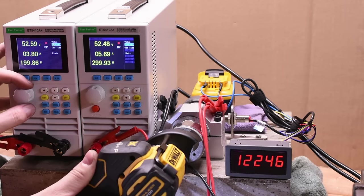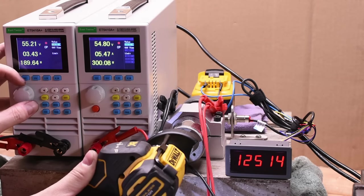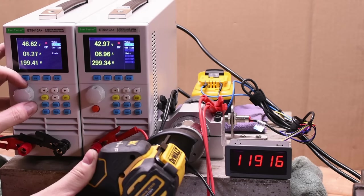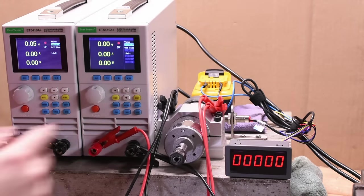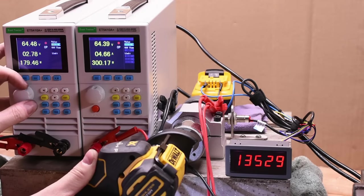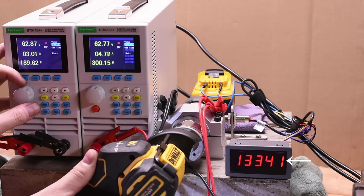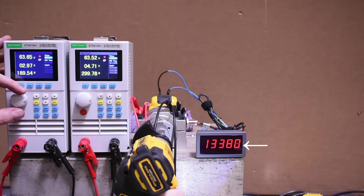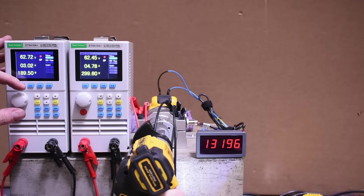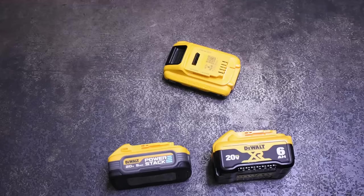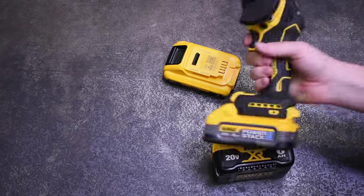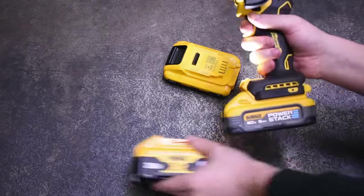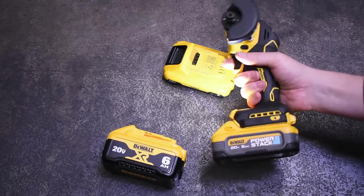440 watts, 450, 460, 470, 480, 490, and 500, and it eventually cuts out at 500, exactly like the 6 amp hour did for us. A protection limitation of the tool, not the battery. So both batteries can max this tool out. And when this Power Stack hit 490 watts, it was at 13,300 RPM, while the 6 amp hour was at 13,300 RPM, 13,200 RPM.